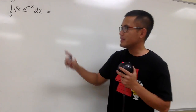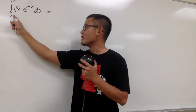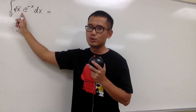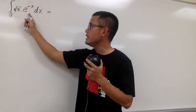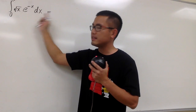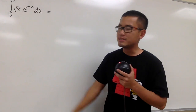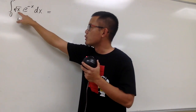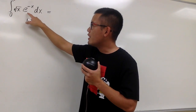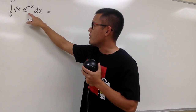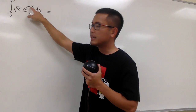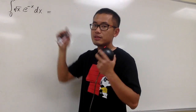We'll take up this improper integral: the integral from 0 to infinity of square root of x times e to the negative x dx. As we can see, we have square root of x, but for the exponent of e, it's just negative x.